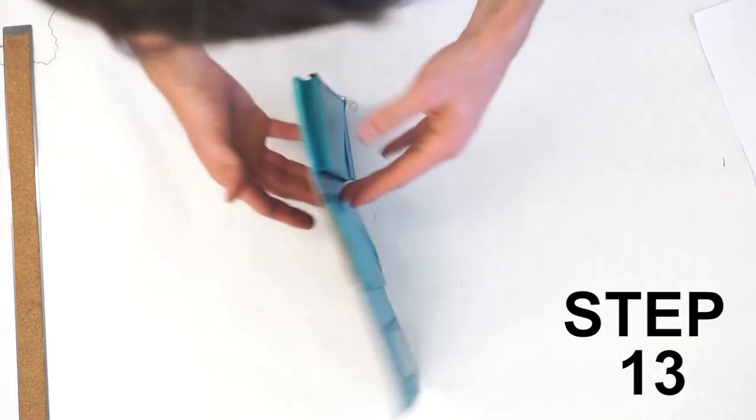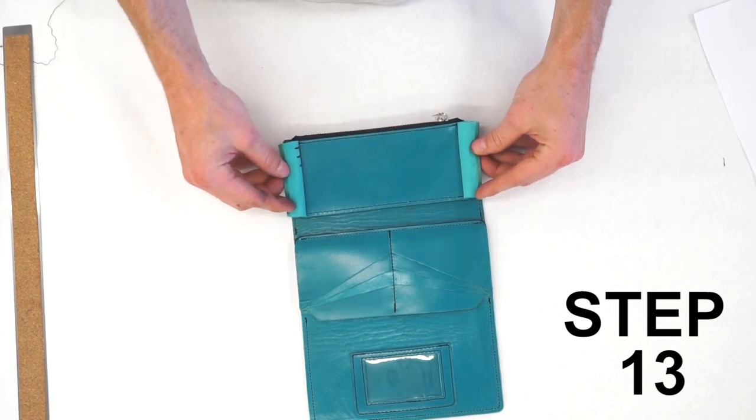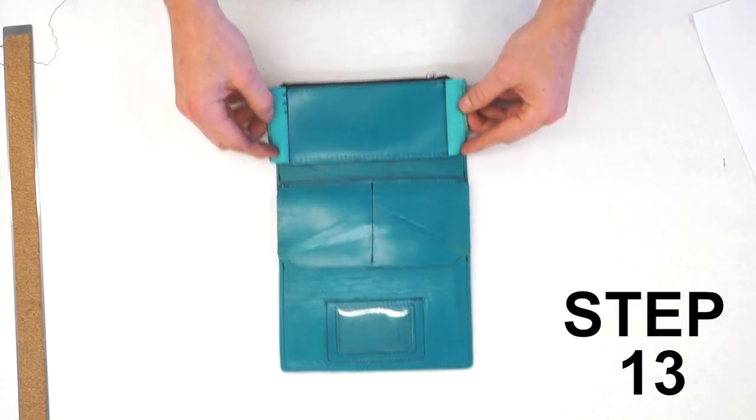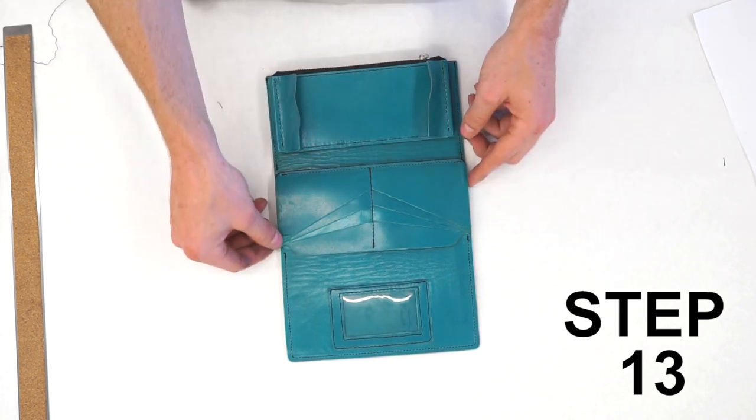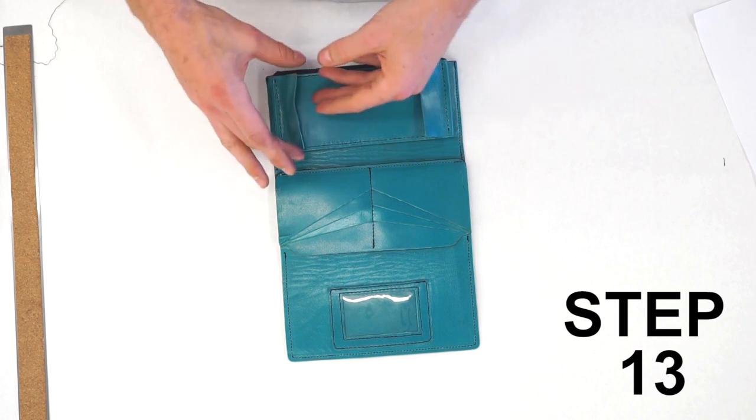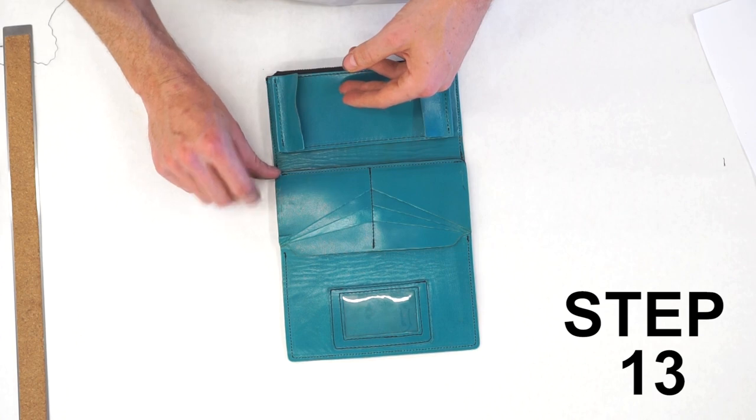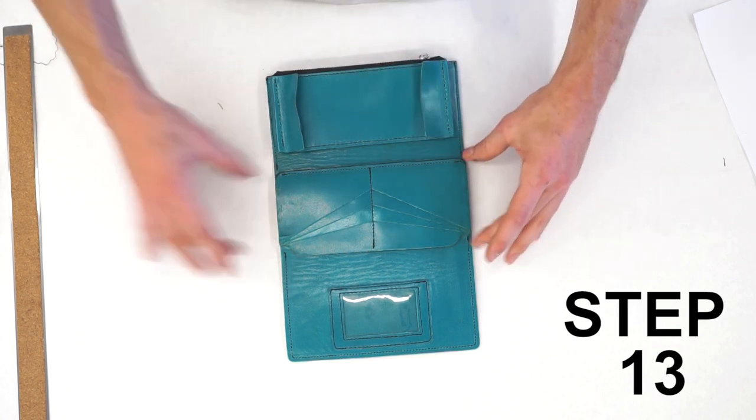We've already applied glue to the inside of our gusset flaps, and we're going to apply glue down the sides of our pocket assembly. Your gusset flaps should line up right with the top corner of your pocket assembly and come all the way down to the bottom. Right there and there.